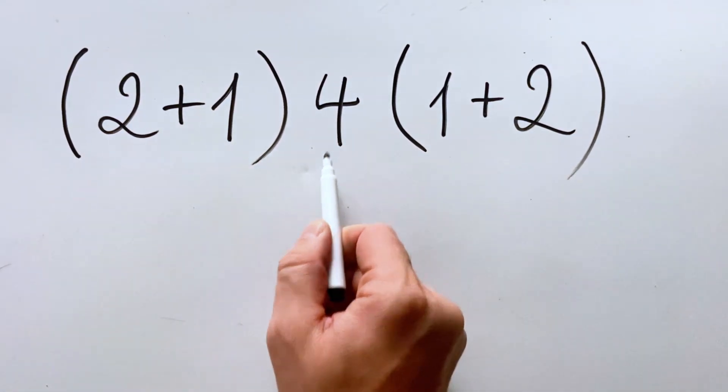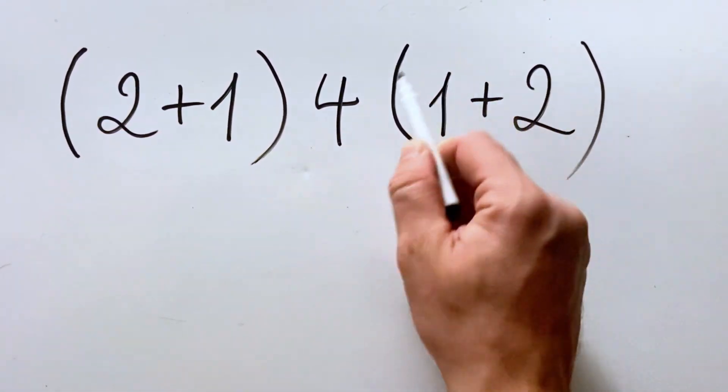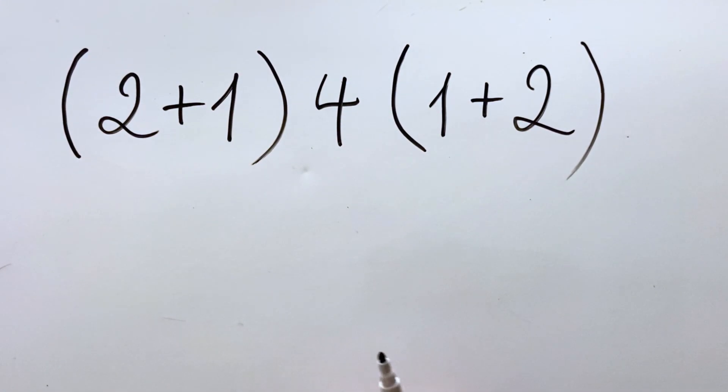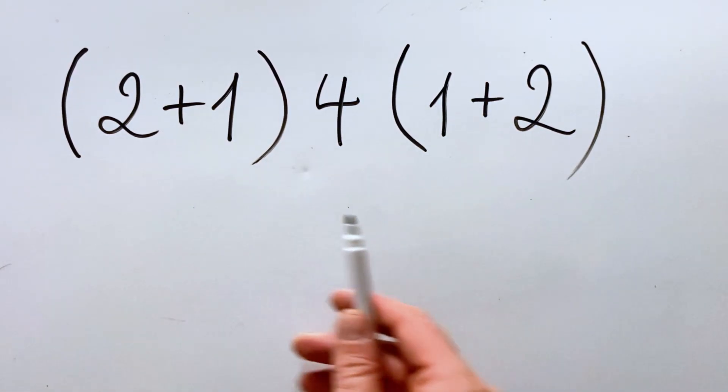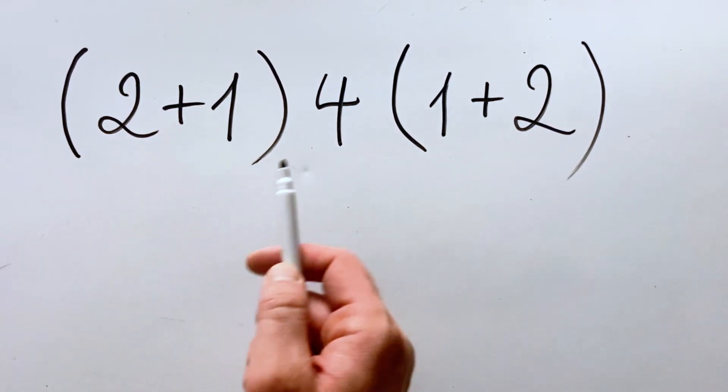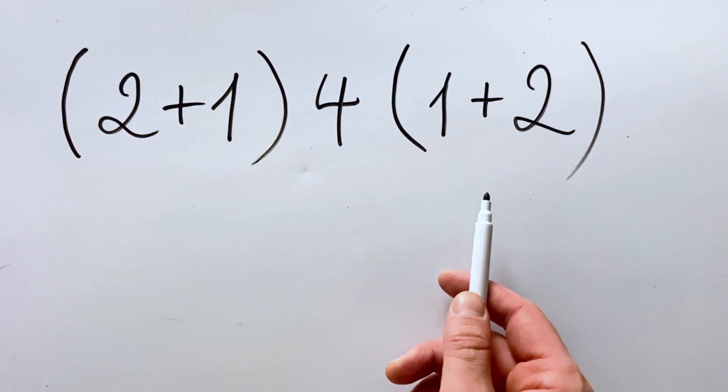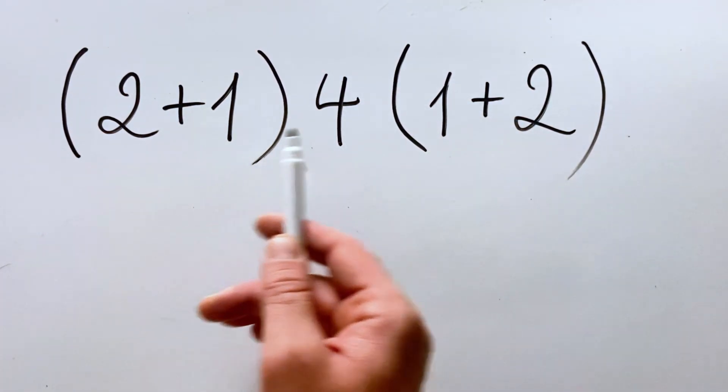We have (2+1) next to 4 next to (1+2). At first, it might look ambiguous or you might find it confusing how this is even possible and what to do first.